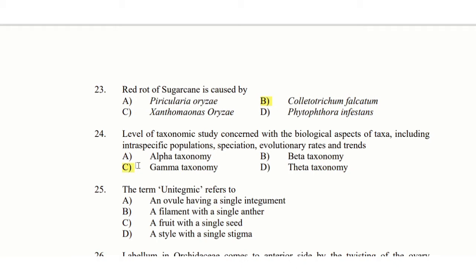25th question: The term unitegmic refers to — option A: an ovule having a single integument, option B: a filament with a single anther, option C: a fruit with a single seed, option D: a style with a single stigma. The answer is option A: an ovule having a single integument.